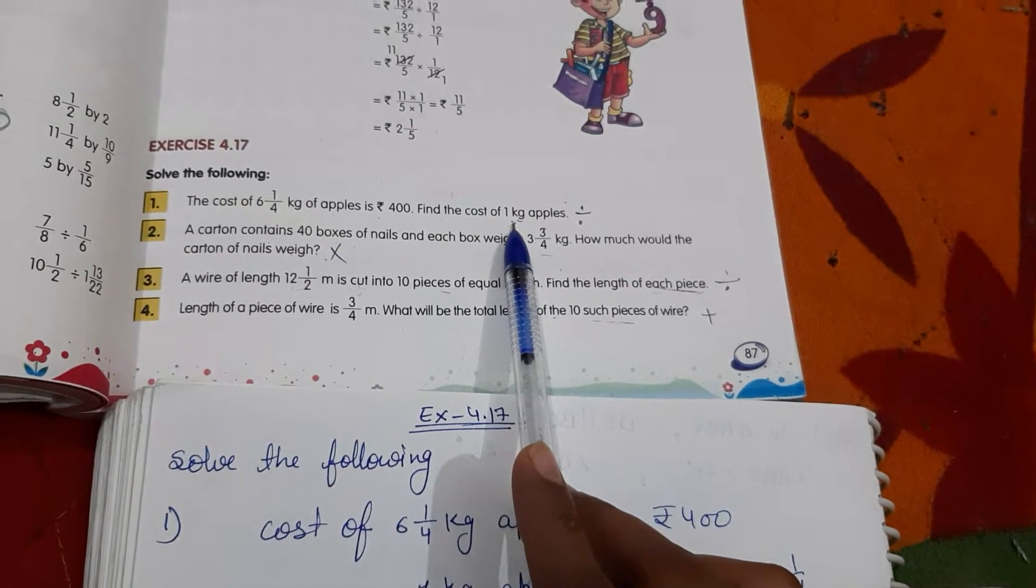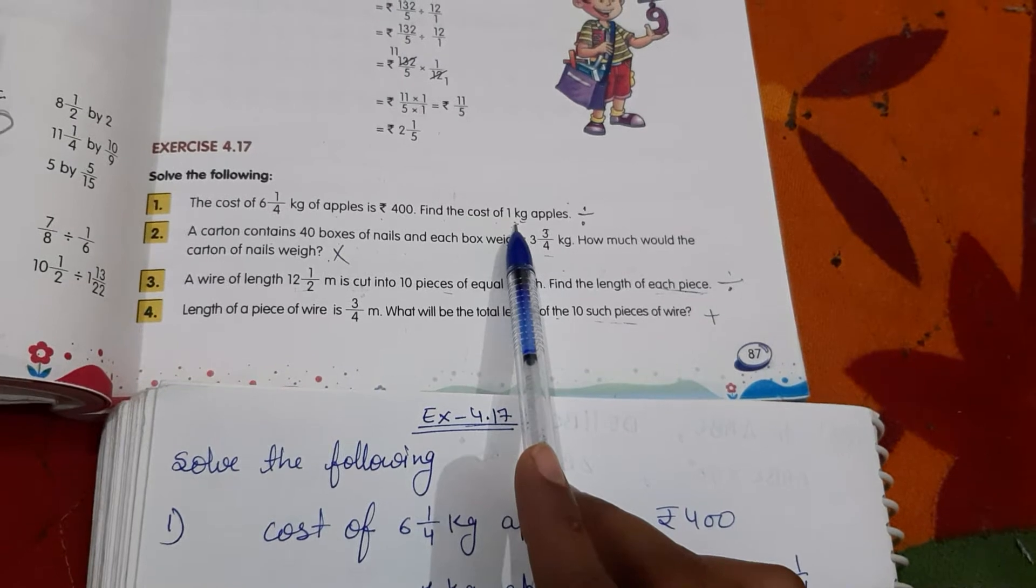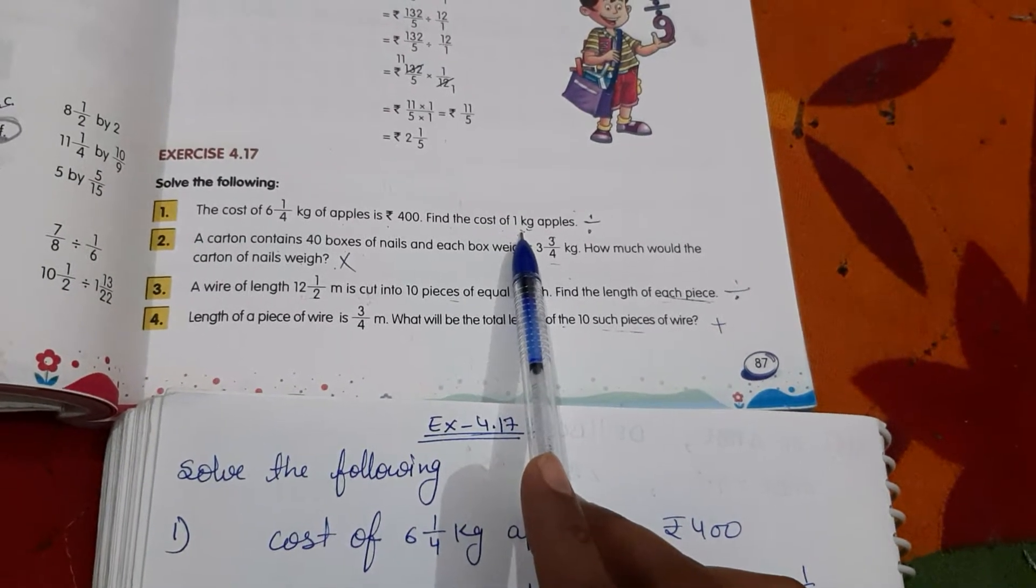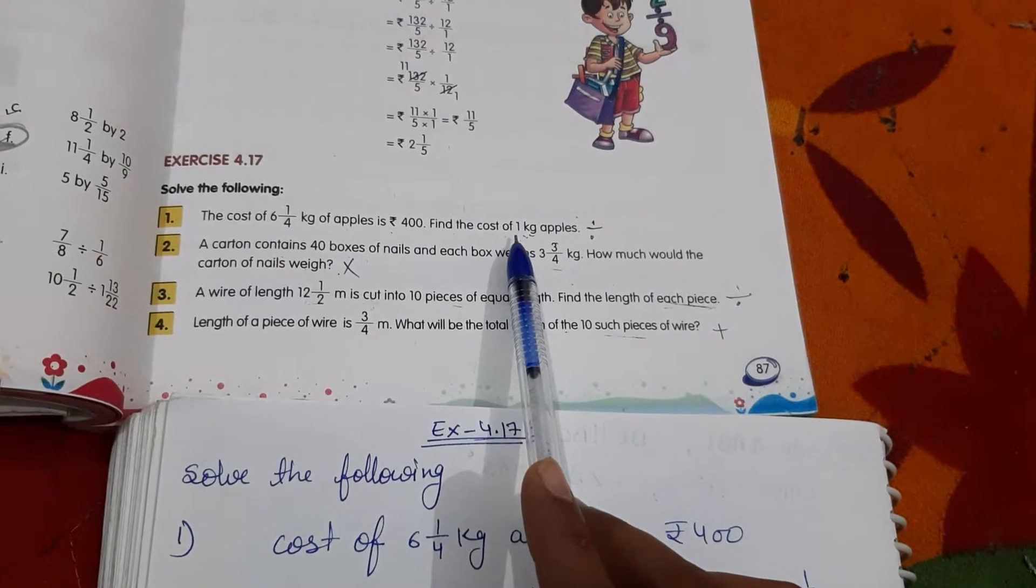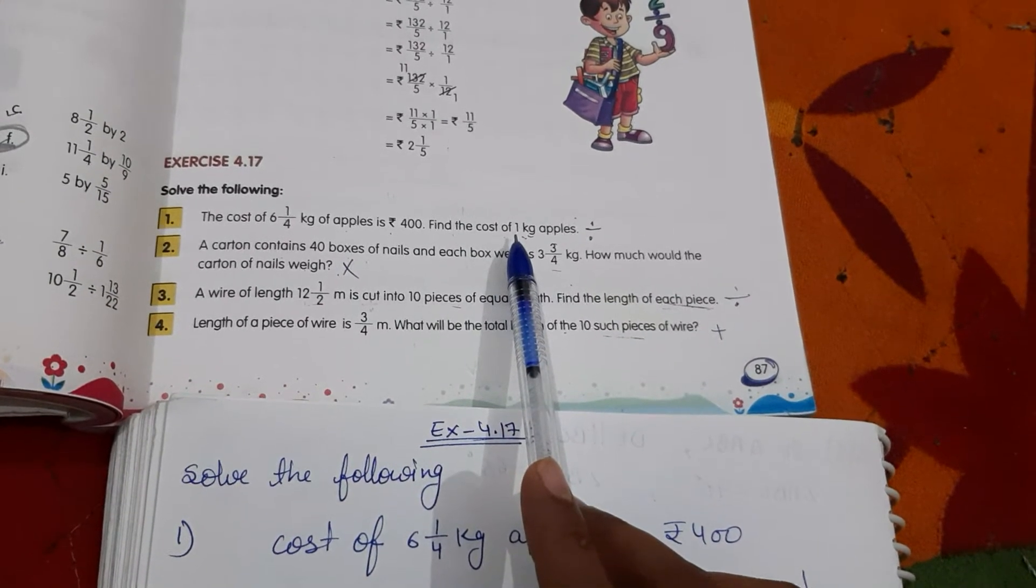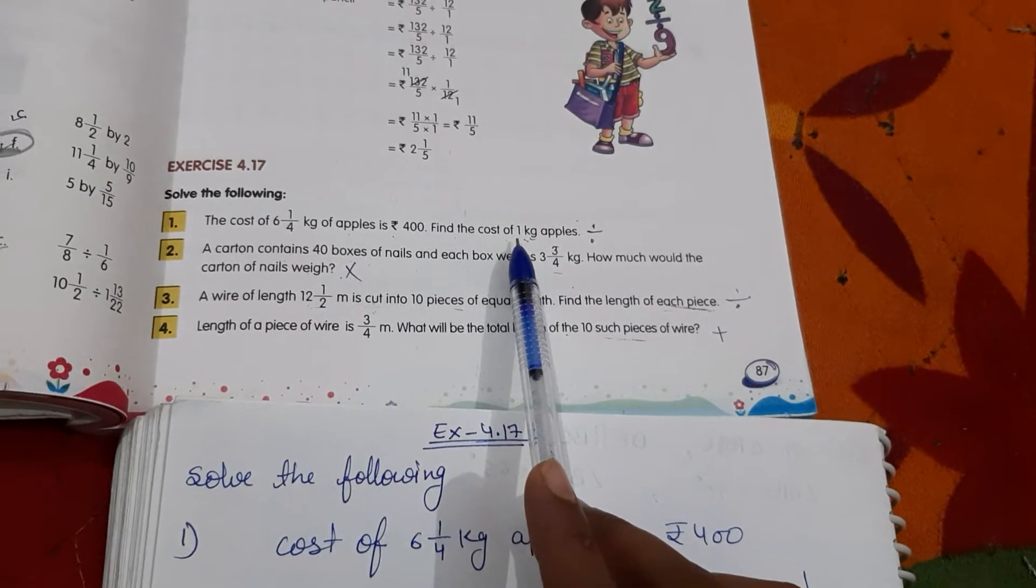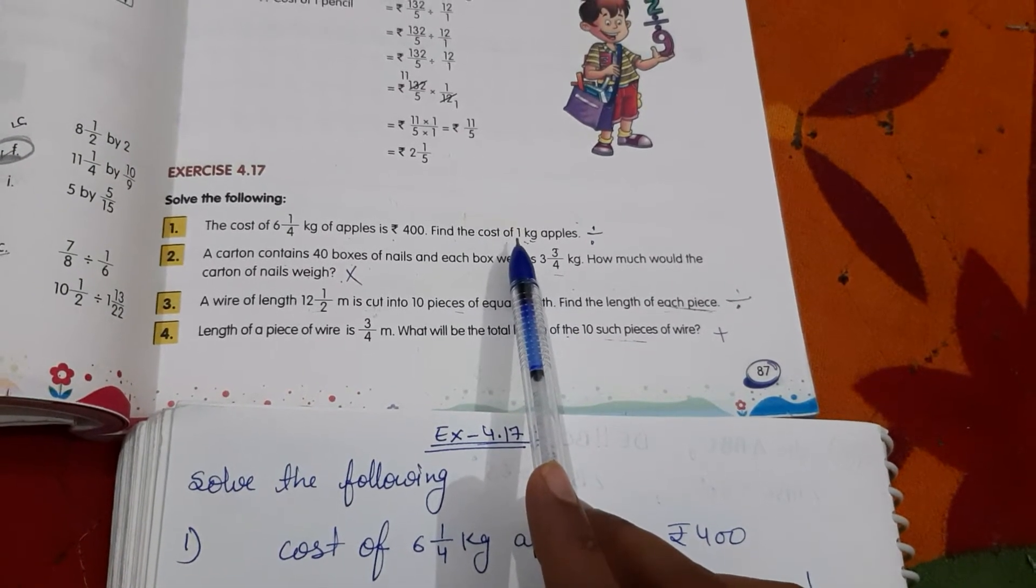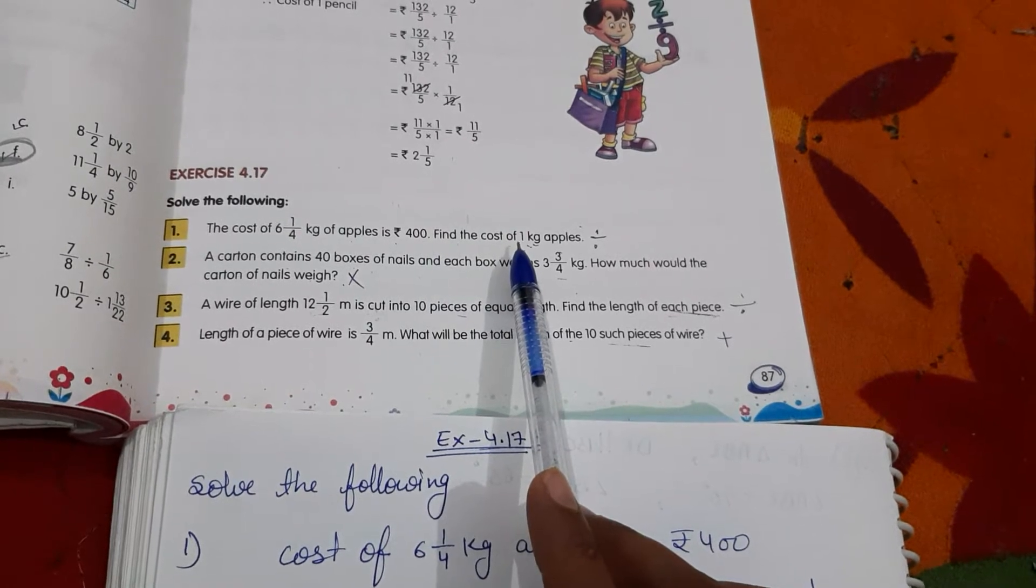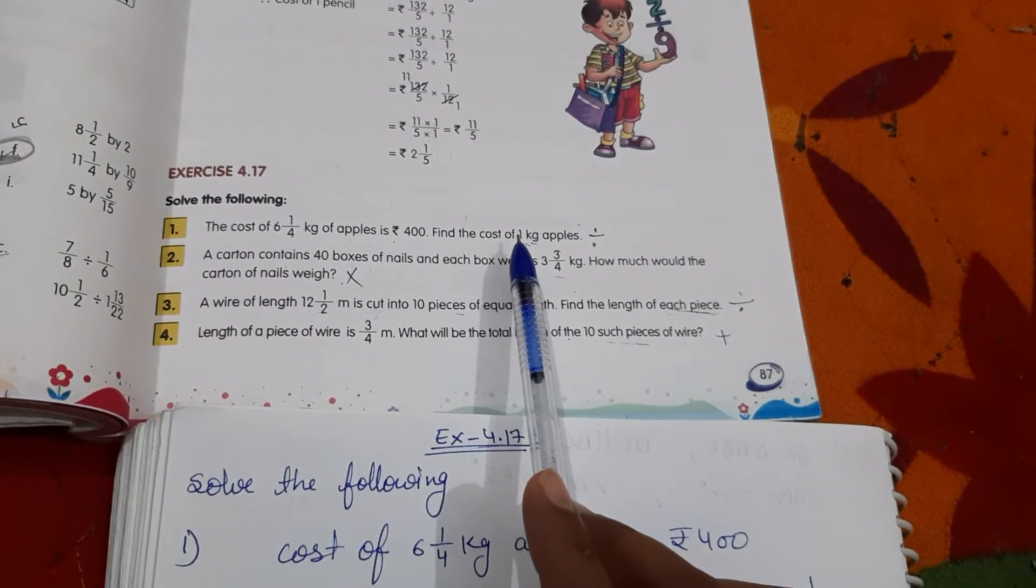I am giving you one example. Suppose you went to market and you purchased a pan. Now you purchased a pan and you take from shopkeeper 10 pans for 100 rupees. So what is the cost of 1 pan? So what you have to do? Divide. Then after, easily you can find out per pan cost is 10 rupees.